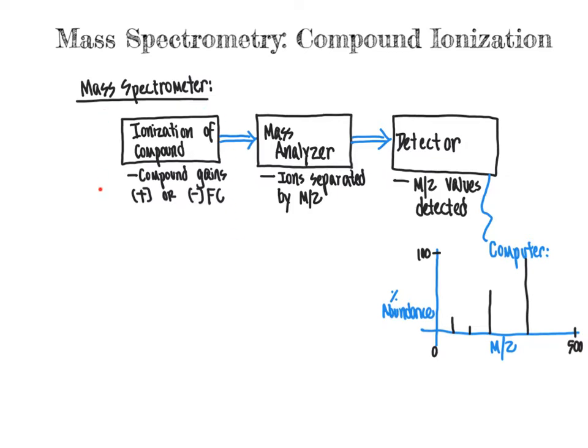In this video, what we're going to focus on is compound ionization — specifically looking at the methods by which compounds are ionized at the first stage of the mass spectrometry experiment. We are going to focus on three main methods by which ionization occurs. The first is the most traditional ionization method. Then we will look at a couple of modern techniques that include desorption ionization methods, as well as spray ionization methods such as electrospray ionization, or ESI.